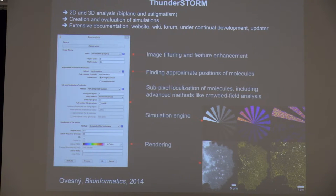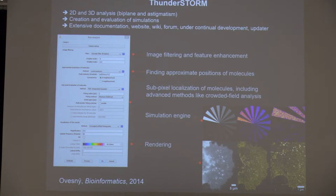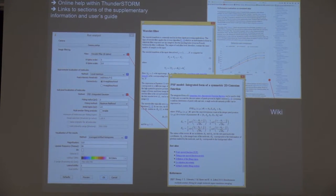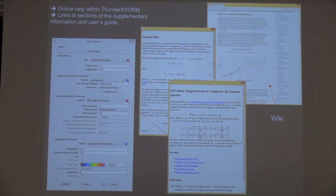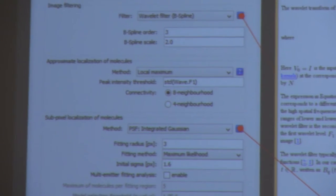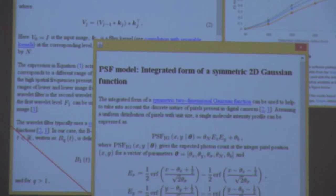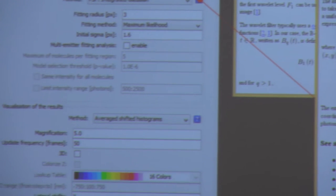We can also create and evaluate simulations. We have really extensive documentation — there's a website including a wiki and a forum. The software is still under development and it automatically updates in ImageJ, though you still have to click it — it's not the super Fiji kind. It was published in 2014 in Bioinformatics. We also have help online within the software: clicking the little blue question marks pops up the relevant section of the user manual or supplementary information. On the right-hand side is a page from the website and wiki, with links to supplementary data and tutorials.